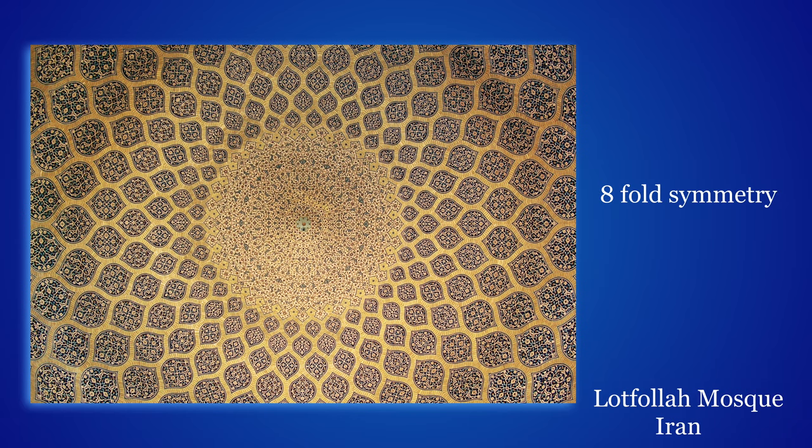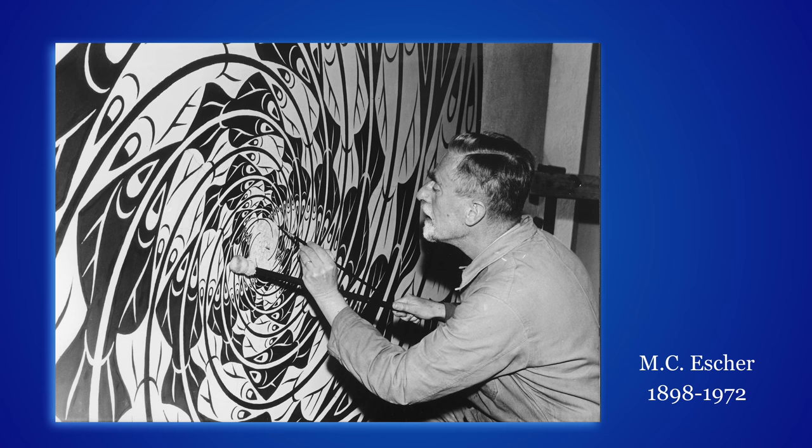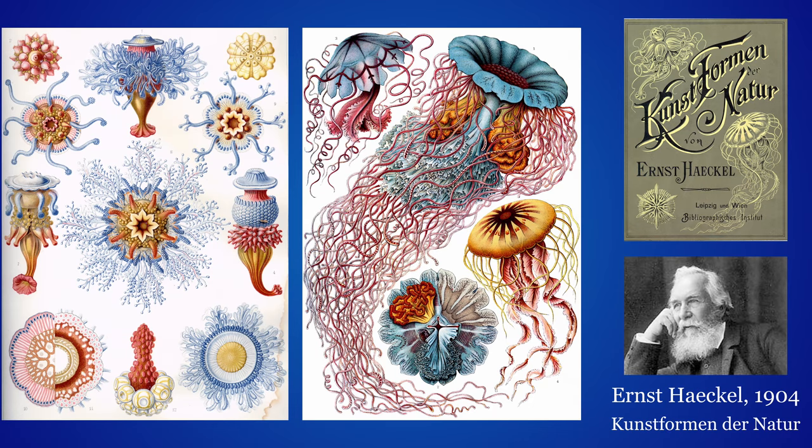Architecture symmetry is important. Here is an example. Another example, a pop artist like M.C. Escher made a trade of symmetry. Here we see him painting one of his pictures. And finally, again back to nature, one could think that these creatures were invented, but these are drawings of Ernst Haeckel.